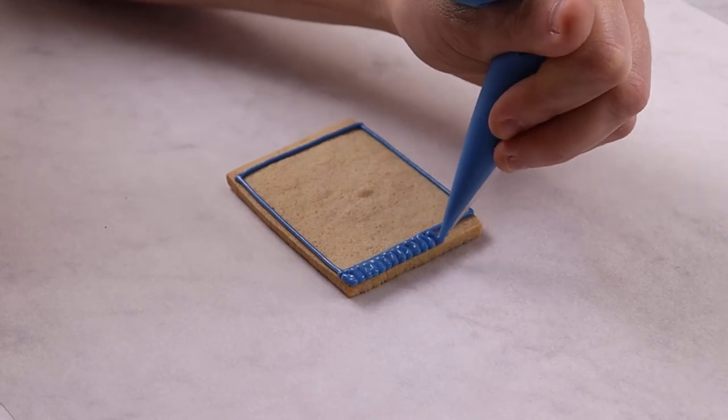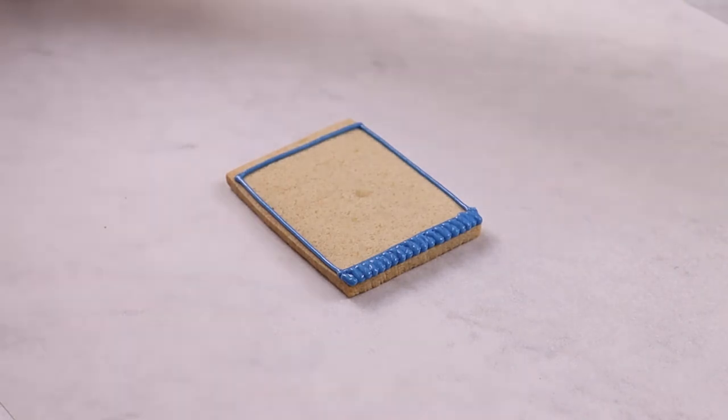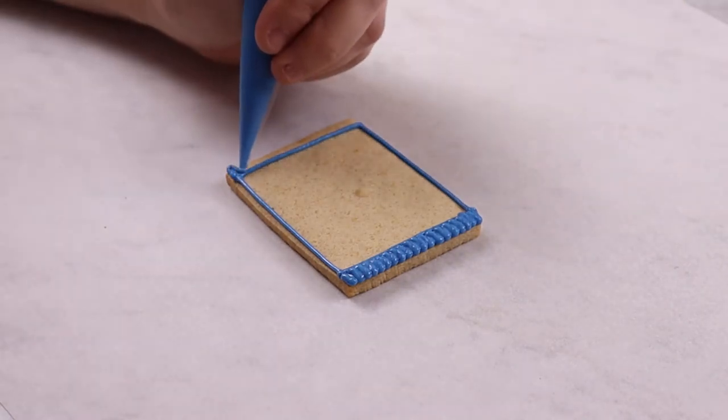Line icing can also be used to fill in small areas of biscuit if you don't have flood icing or you just want to create a different texture.